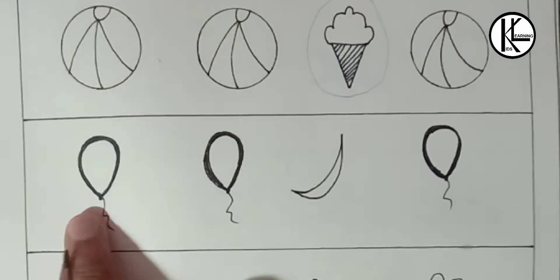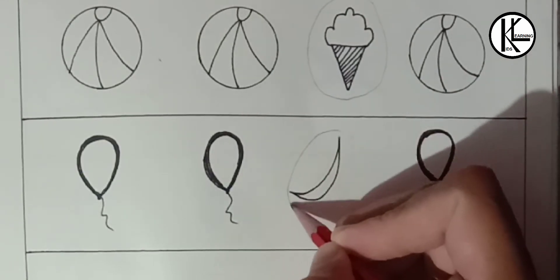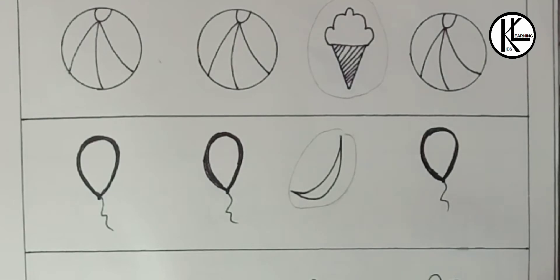After that we are having here three balloons and this is a moon. So it is odd. We will circle it.